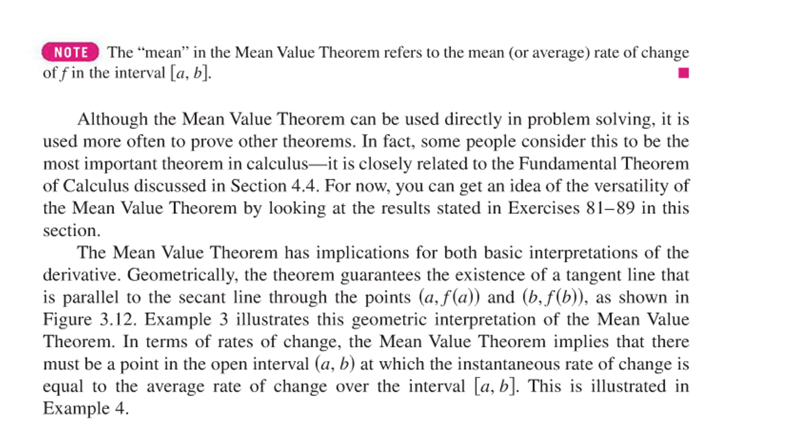Now several things I should say. The mean in the mean value theorem refers to the mean or average rate of change of f on the interval a b. We can use this in direct problems and I'll probably ask you some of that but this is one of the most important theorems in calculus because this is how we will prove the fundamental theorem of calculus later. In the middle of that proof we will invoke the mean value theorem and geometrically the theorem guarantees the existence of a tangent line that is parallel to the secant line through those points and you can talk about various geometric interpretations of it. So there must be a point at which the instantaneous rate of change is equal to the average rate of change if we do this in a physics context.